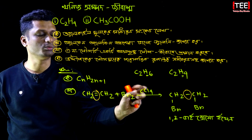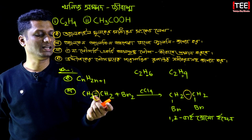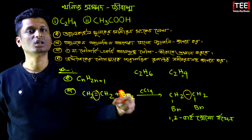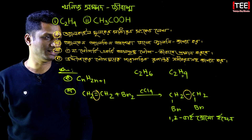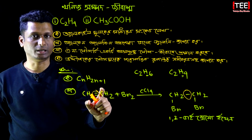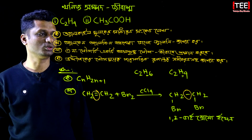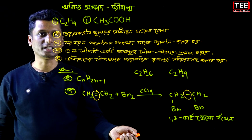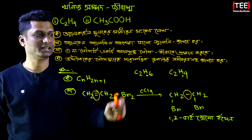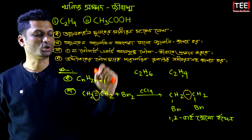The double bond opens and the reaction proceeds. In this way, double bonds and triple bonds react with bromine. When the single bond is present, it remains a single bond. L-cane (alkane) is a single bond, and L-cine (alkyne) is also a single bond.